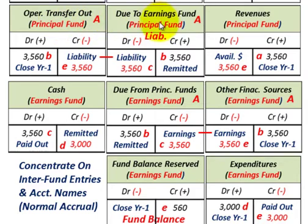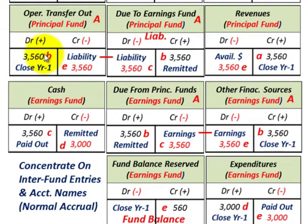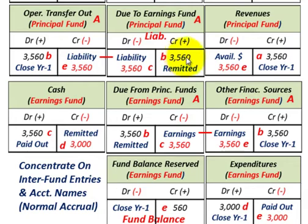Since we have that interest payment, we set up a liability account in our principal fund for the revenues received, then move those funds into the earnings fund. In the principal fund, debit operating transfers out for $3,560 — remember to keep track of those account title names. Then credit due to the earnings fund for $3,560 in the principal fund, setting up the liability since those revenues must be paid out to the earnings fund.